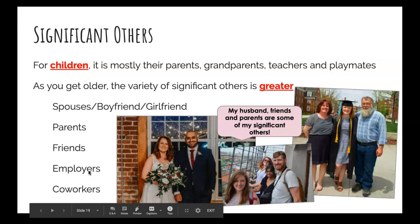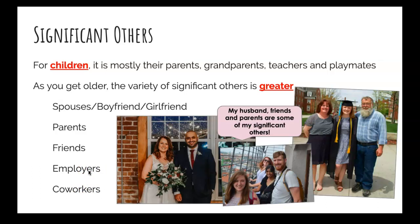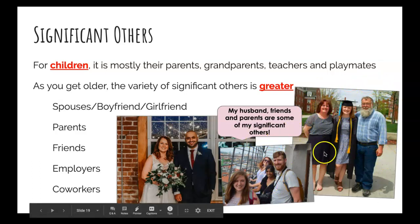As you get older, the variety of your significant others becomes greater — spouses, boyfriends and girlfriends, parents and family members, friends, and as some of you get jobs, your employers, boss, and coworkers. Speaking of employers, Mrs. Hafner is technically my boss and I care a lot about what she thinks of me, so I use the looking glass self process in every interaction with her. My other significant others include my parents, some friends who are also coworkers, and my husband.